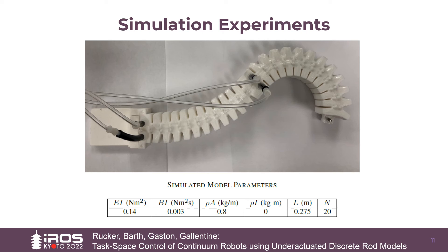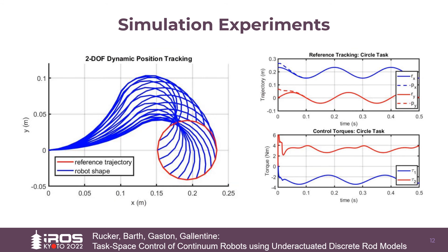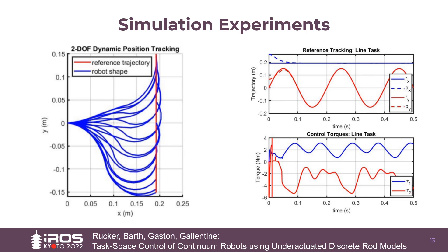To demonstrate robustness, all simulations were performed with significant parameter differences between the observer model and the ground truth robot, and significant initial state estimation error. Starting from the straight state, which is singular, the approach succeeds in driving the task space error to zero under significant parametric modeling error in the case of this circle tracing task. Similarly, in the case of a cyclical line tracing task, the approach again drives error to zero. These tasks are high speed and the controller is working hard to overcome significant underactuated dynamics, as evidenced by the high frequency modes seen in the control torques.